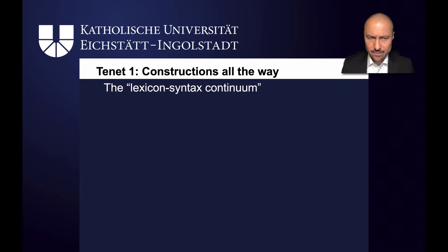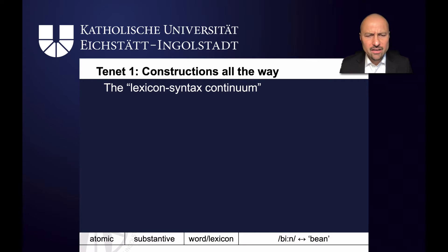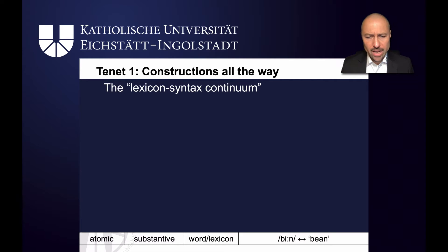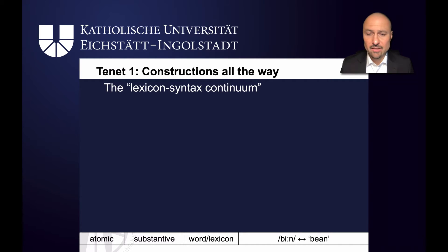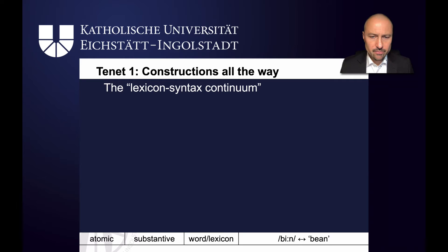Let's have a closer look at the constructicon and see what constructions lie on this lexicon-syntax continuum. On one hand, we've got atomic substantive constructions. Atomic means they've only got one element on the form level — here 'bean' — and substantive means it doesn't have any slots, so the phonology is fully filled. The word 'bean', which has the sound /bɛn/ linked to the meaning of beans — the concept of bean — is a word. Classically we would find these in the lexicon, but in construction grammar we just call them atomic substantive constructions.